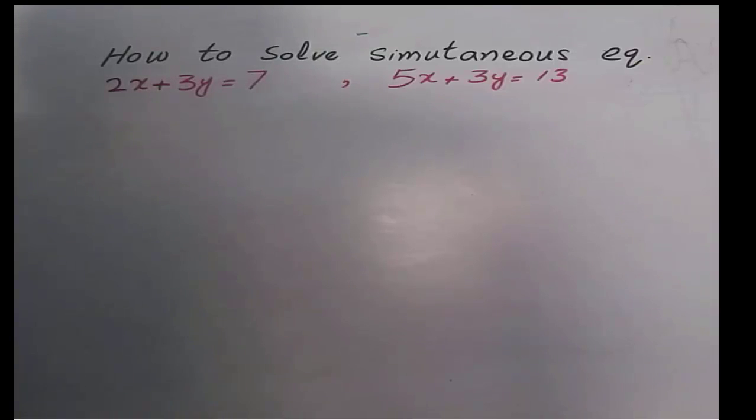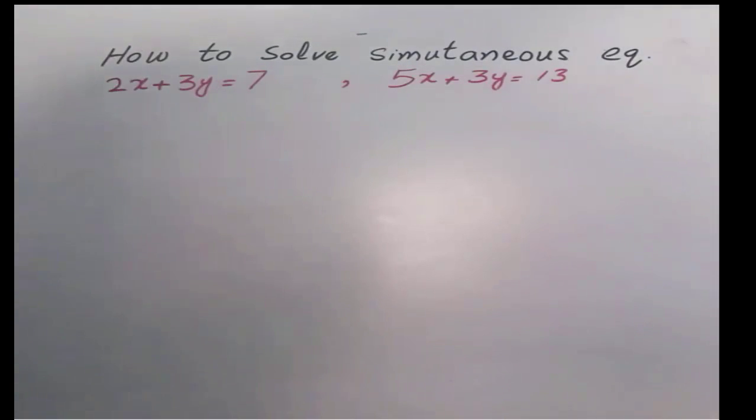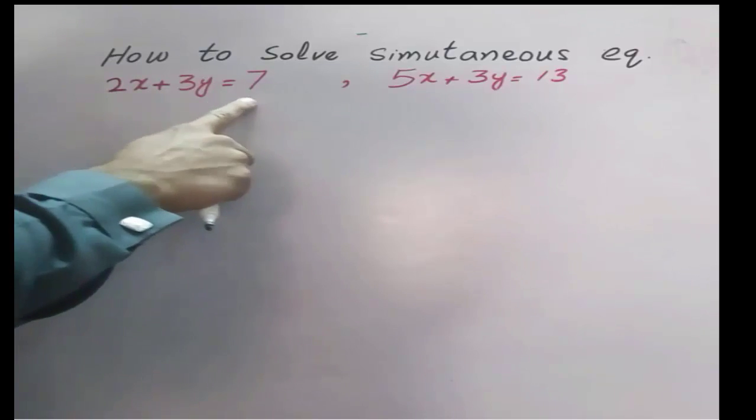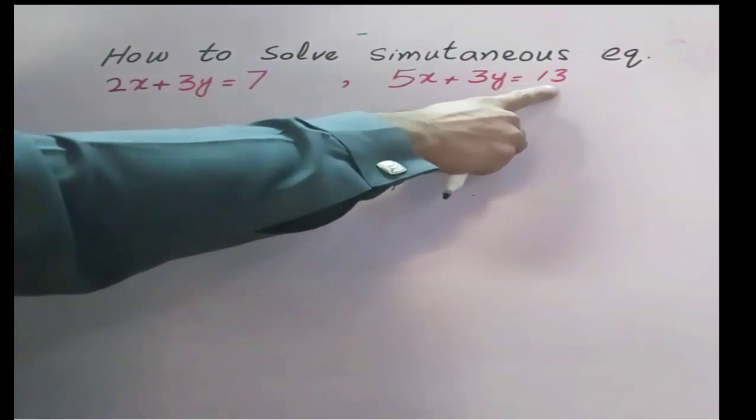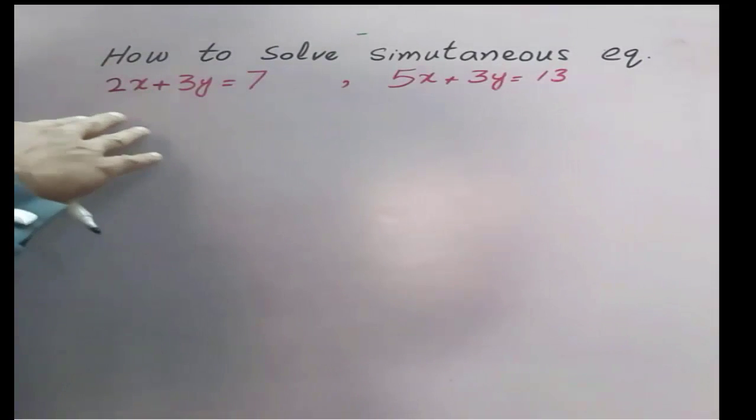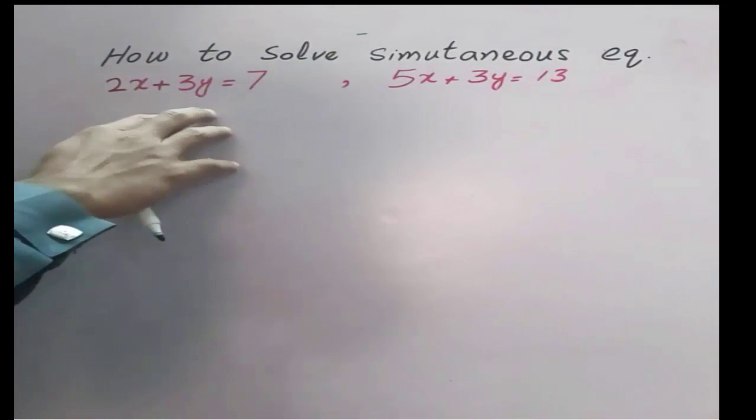Everyone, welcome to the channel Math VBN. Look at this typical equation here: 2x plus 3y is equal to 7, and 5x plus 3y is equal to 13. We are going to solve this equation simultaneously.